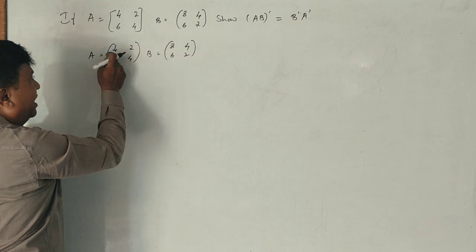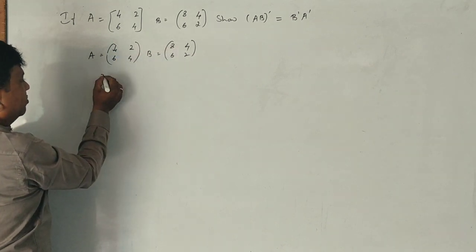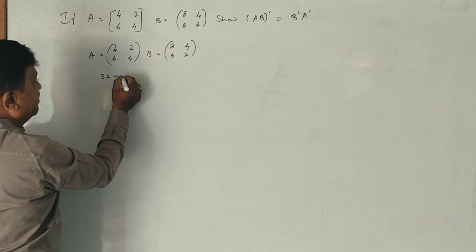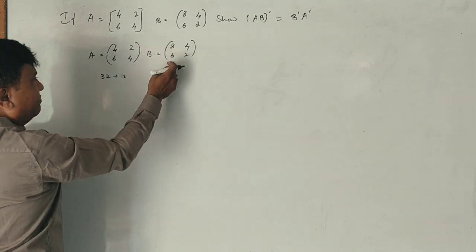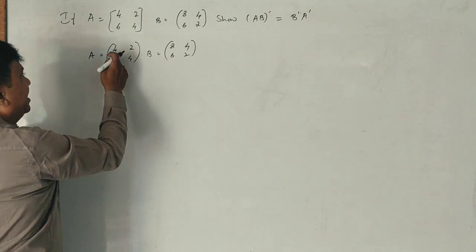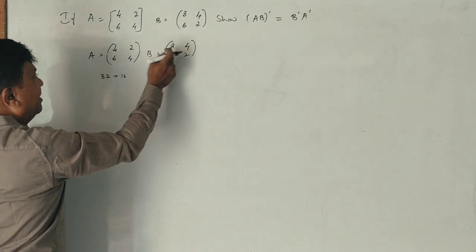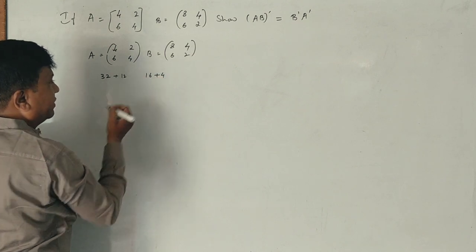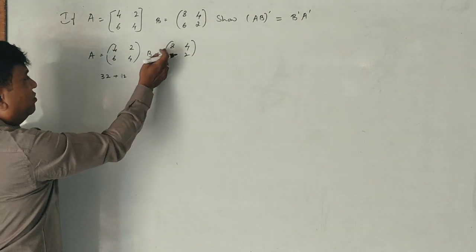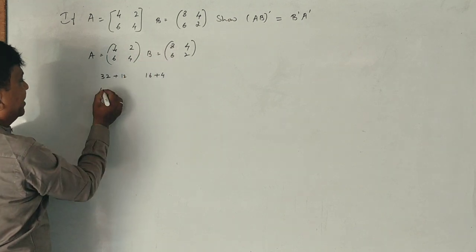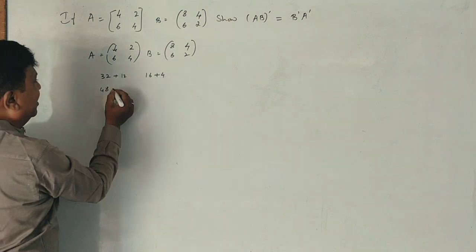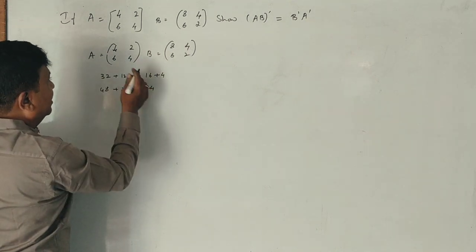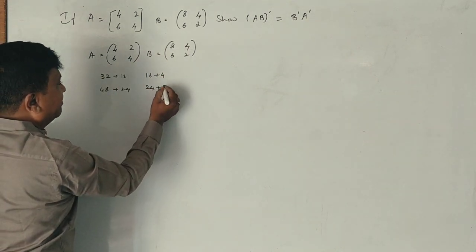First row into first column of A: 4×3 is 432, plus 2×6 is 261, correct? This gives the first row of B. Now first row into first column of B. Now first row of B and second column of B: 2's are 4. Next, second row first column: 6A's are 48, 4, 6's are 24, 6, 4's are 24, 4, 2's are 8. Correct?